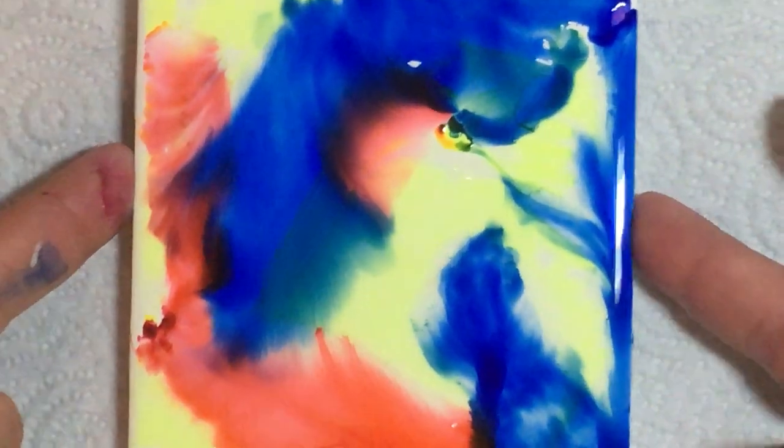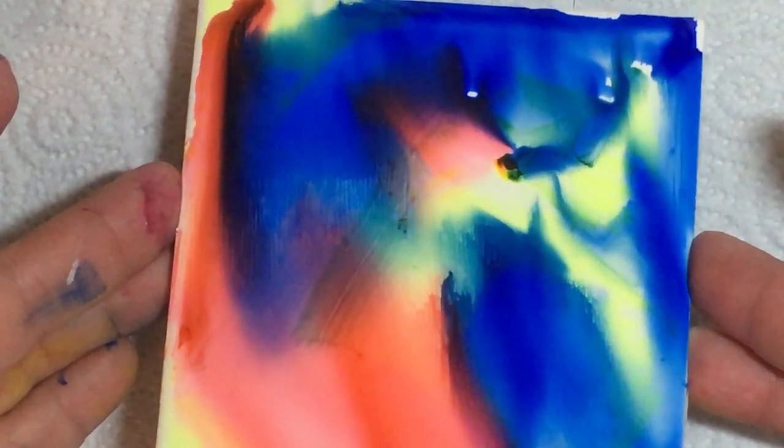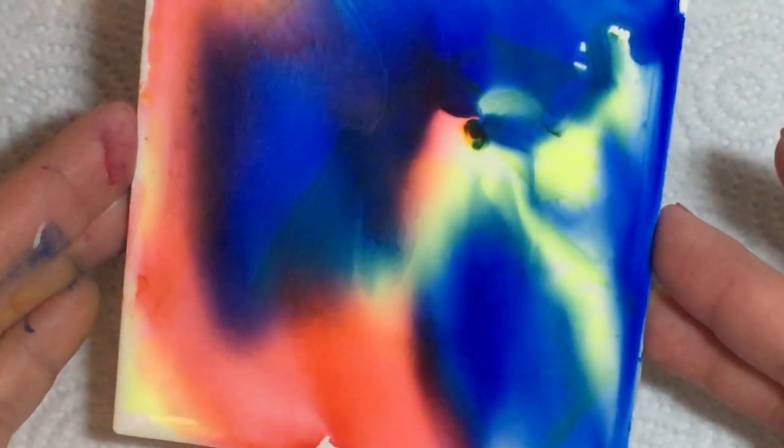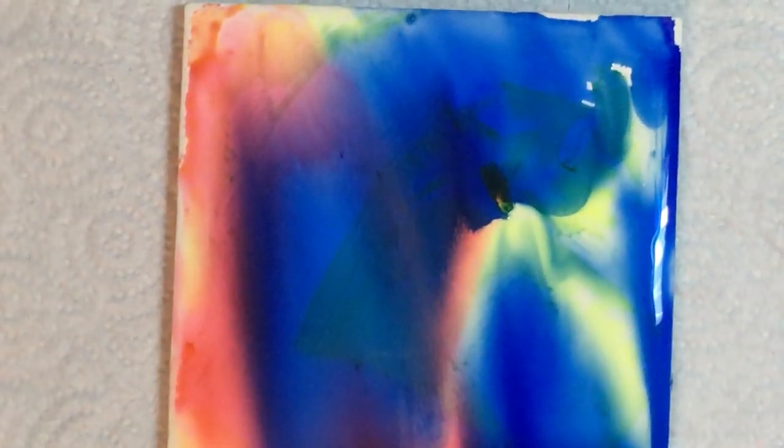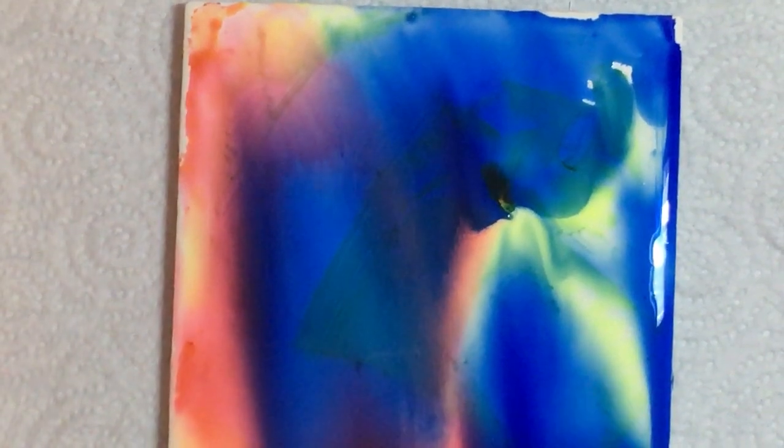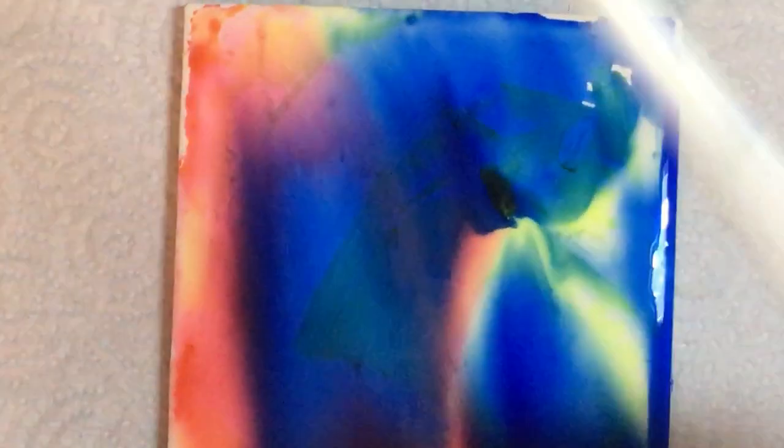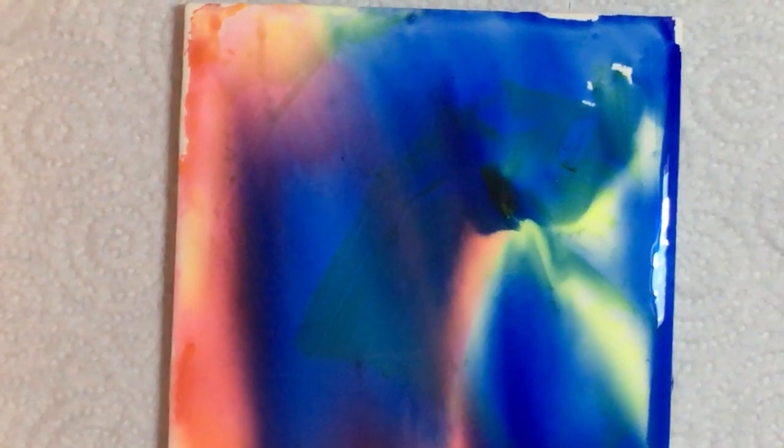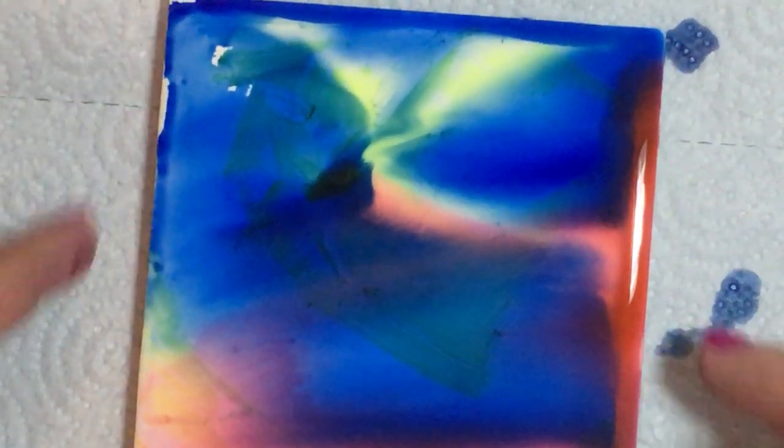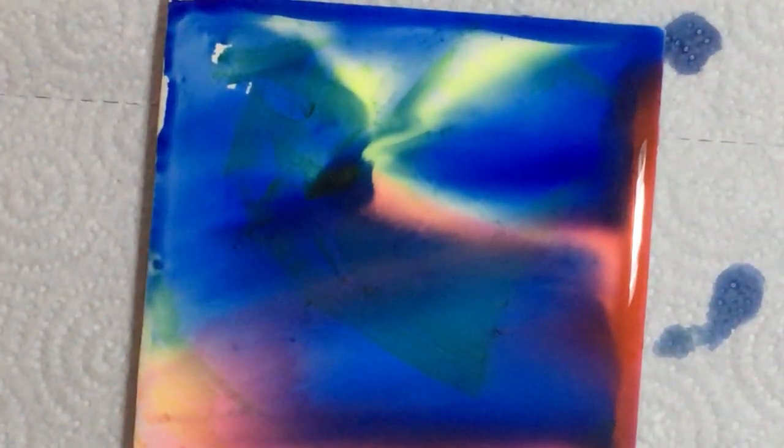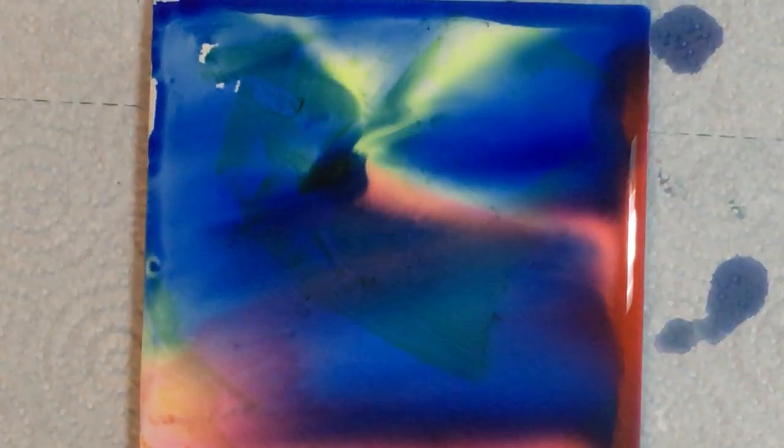So now you can take the tile and tilt it, and voila, look at that! Isn't that cool? And see what I mean, you need a lot of yellow because the blue really takes over. You can take a straw, a little bendy straw, and blow. What I'm gonna do is, there's so much blue in here, I'm going to blow some of this red into it.